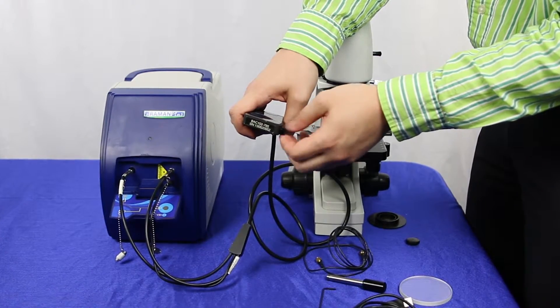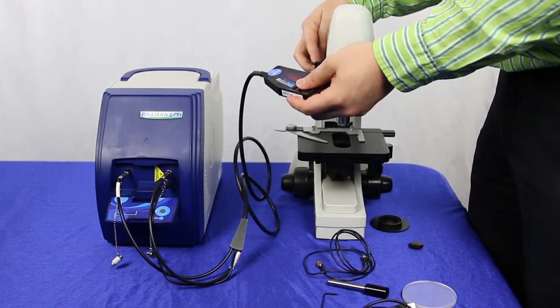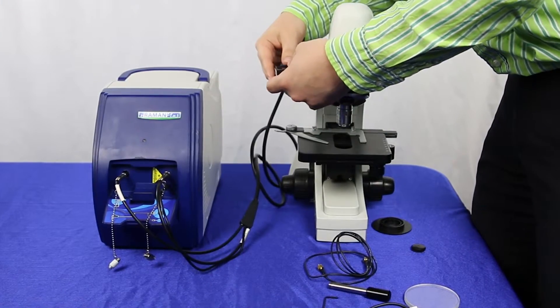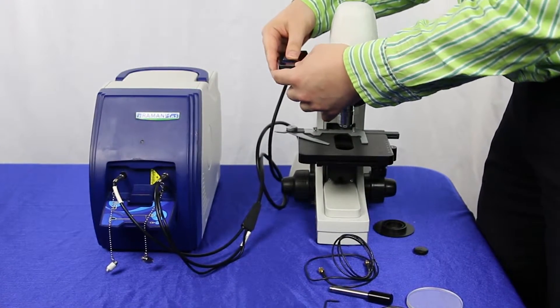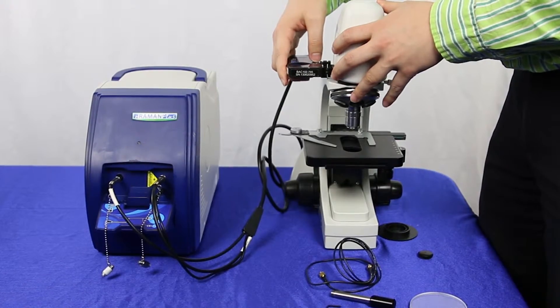Once that's screwed in, there will be a plastic piece here that you'll want to take out. You can then insert the probe into the microscope.